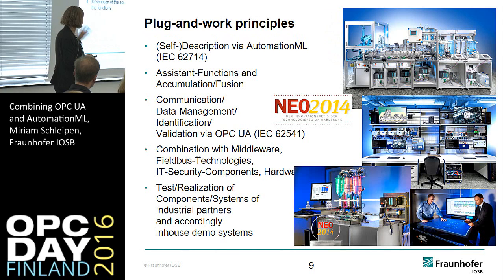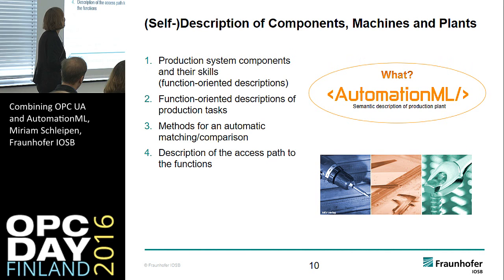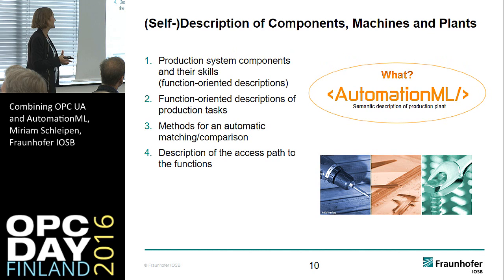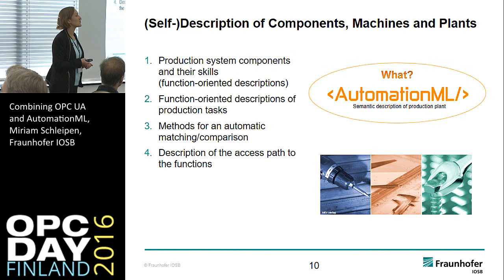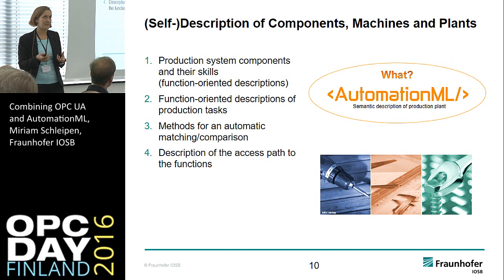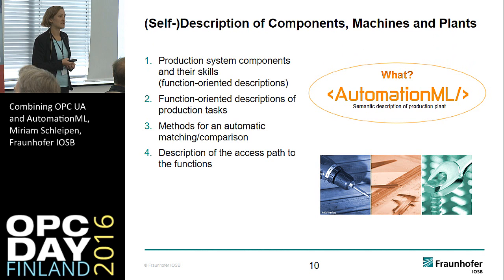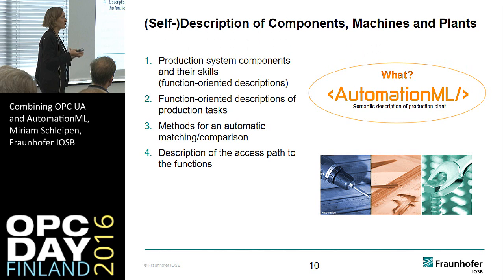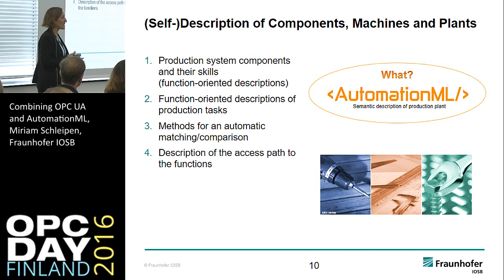AutomationML describes the production system components and their skills. It gives you the possibility to include methods for automatic matching or comparison — so you can say: I need a gripper right now, what constraints does the component have to fulfill, and is there a matching component? This is really important for the marketplaces which are growing up right now. These selection principles are really important because if you cannot compare different things together with general properties, you really cannot have such a matching process.